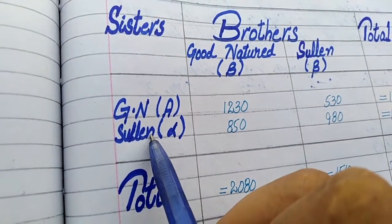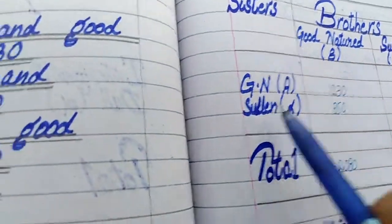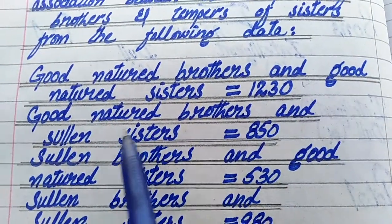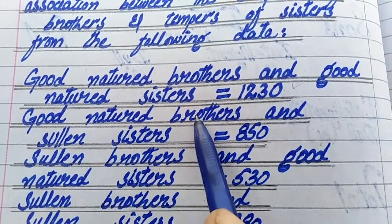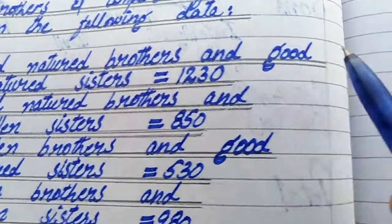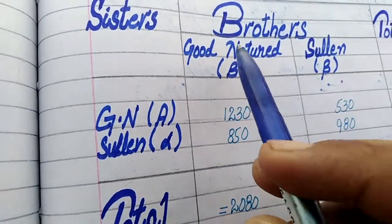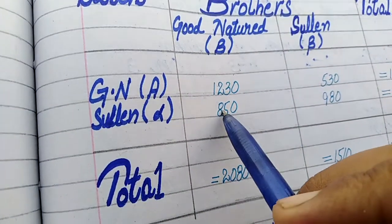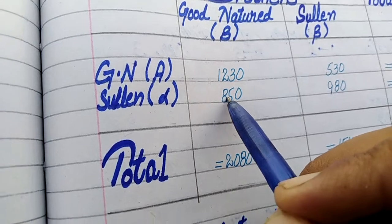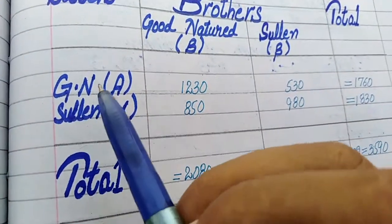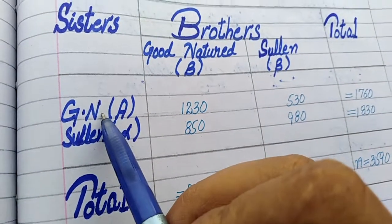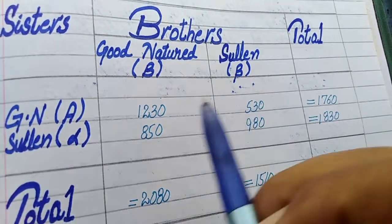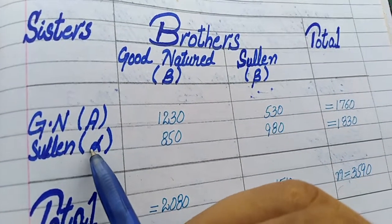Sullen sister: Good nature brother and sullen sister is 850. Good nature sister and sullen brother: and sullen brother and sullen sister is 980.